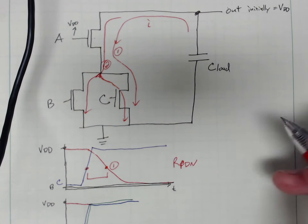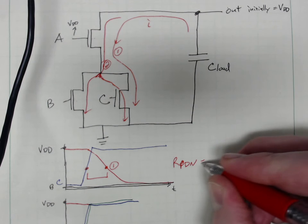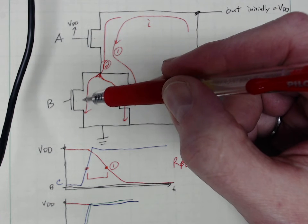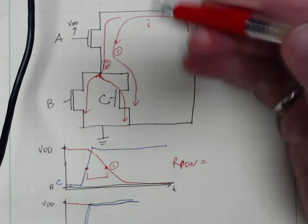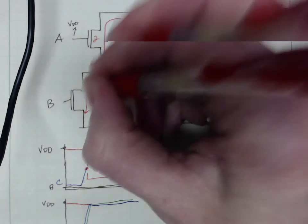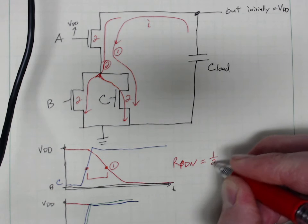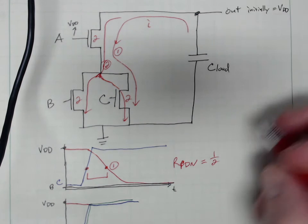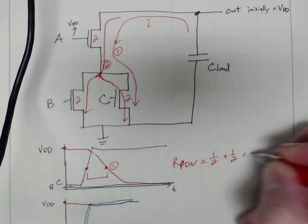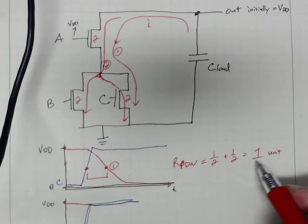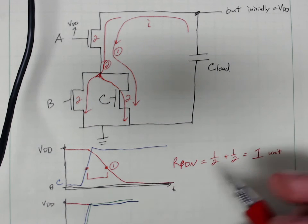Our pull-down network resistance would be equivalent of, well if this is 2y and this is 2y and this is 2y, it would be 1/2. Remember there's only one path here, plus 1/2, and that would be 1 unit of resistance and we'd have a certain time.